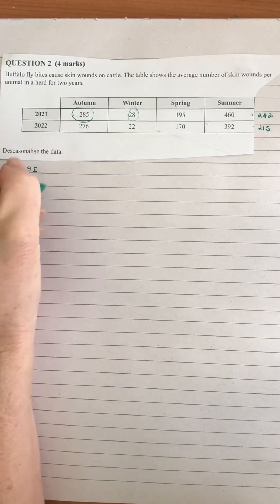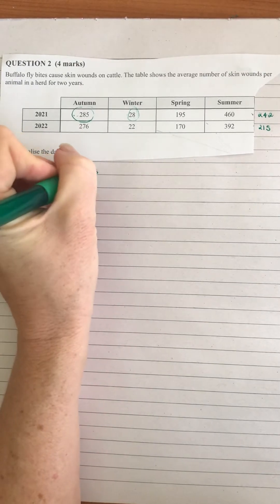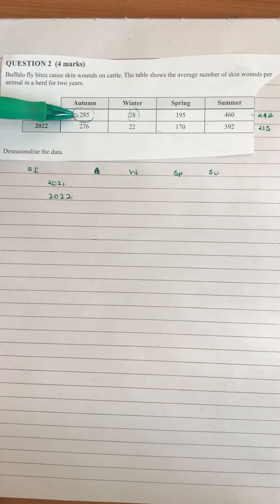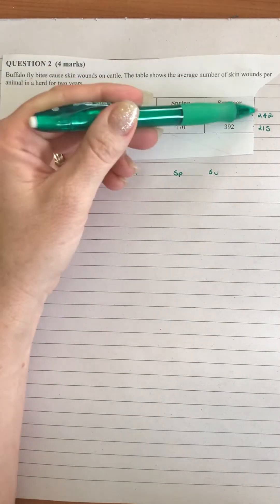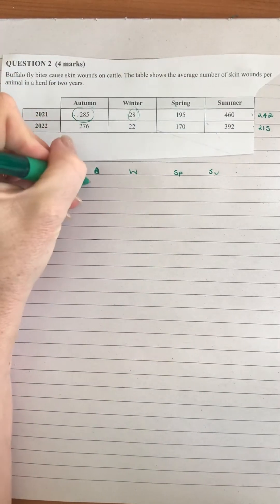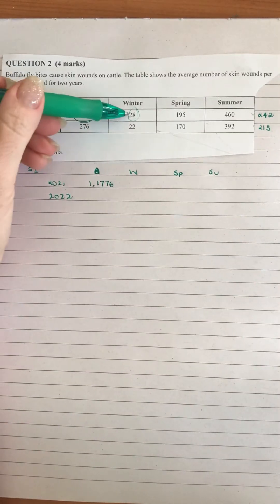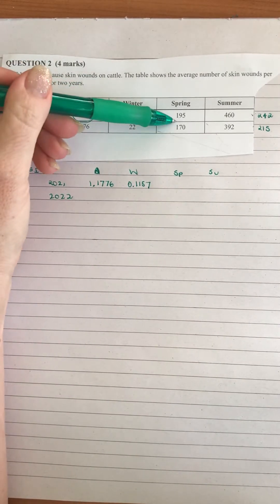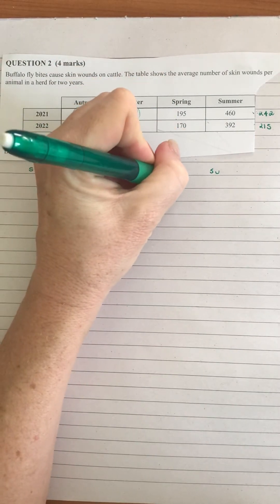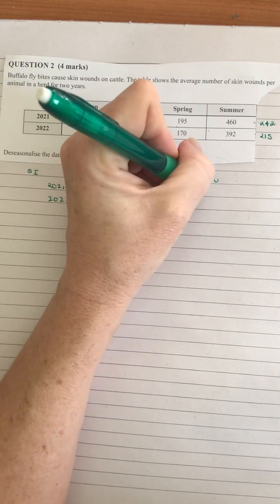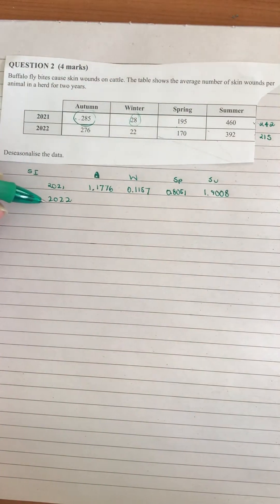The next step is to find the seasonal index for each season. For 2021, for autumn, winter, spring and summer. To get that we're going to grab our value for autumn and divide it by the average. When we do 285 divided by 242 we get 1.1776. When we do 28 divided by 242 we get 0.1157. When we do 195 divided by 242 we get 0.8051, and when we do 460 divided by 242 we get 1.9008.